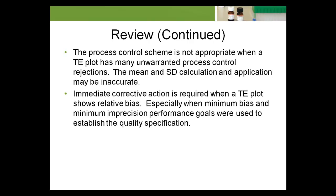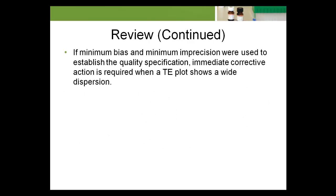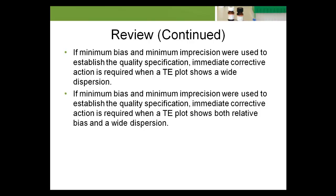Immediate corrective action is required when a TE plot shows relative bias, especially when minimum bias and minimum imprecision performance goals were used to establish the quality specification. Unrecognized or uncorrected relative bias can lead to proficiency testing failures. Immediate corrective action is also required when a TE plot shows a wide dispersion, or both relative bias and a wide dispersion, if minimum bias and minimum imprecision were used to establish the quality specification.